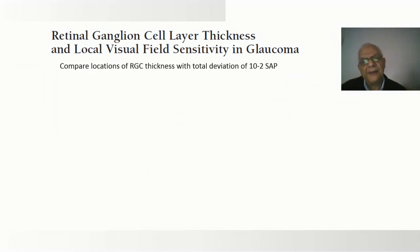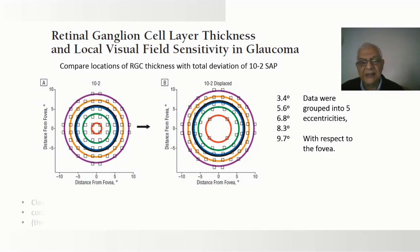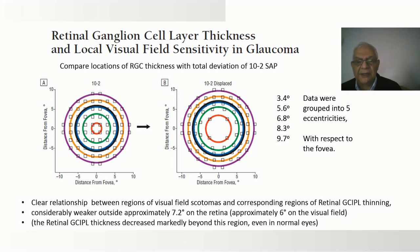Comparing retinal ganglion cell thickness with total deviation of the visual field, data were grouped into fine eccentric locations. A clear relationship was found between regions of visual field scotoma and corresponding regions of the retinal ganglion cell layer. A considerably weaker relation was found outside 7.2 degrees, and the RGC inner plexiform layer thickness decreased markedly beyond this region. Therefore, they considered the central 8 degrees for their model.